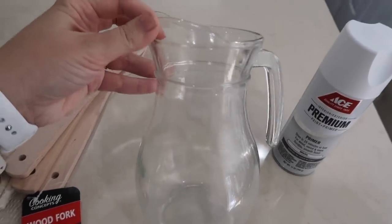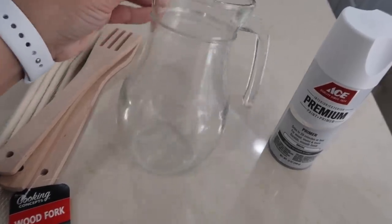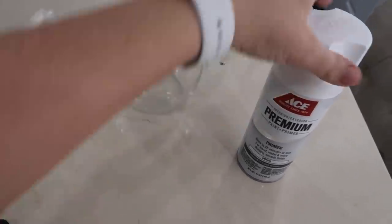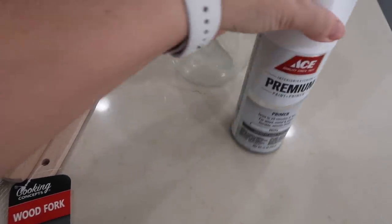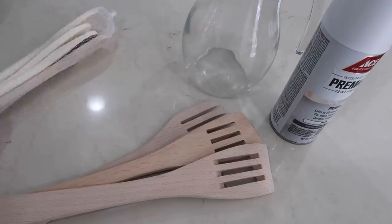Moving on to the next one, another very simple one. All you're going to need is your glass vase, some white spray paint, and some wooden spoons or spatulas or whatever you have laying around the house.